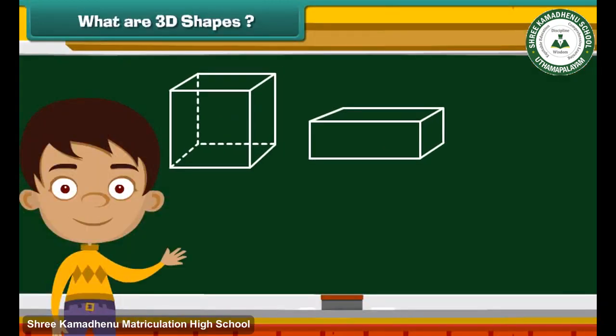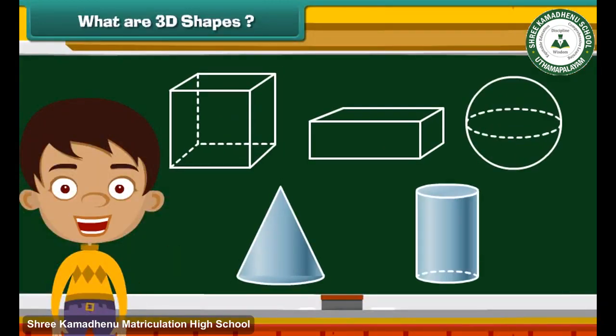Hey, look at these shapes. What did you notice? These shapes have three dimensions: length, width and height. Therefore, we call these shapes as three dimensional shapes. All the three dimensional shapes are solids.